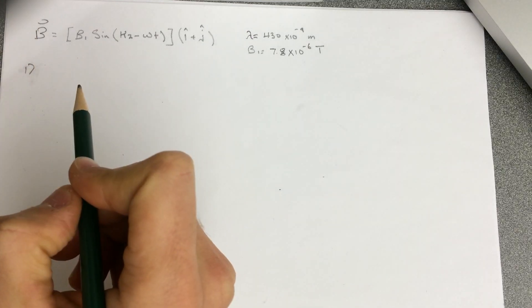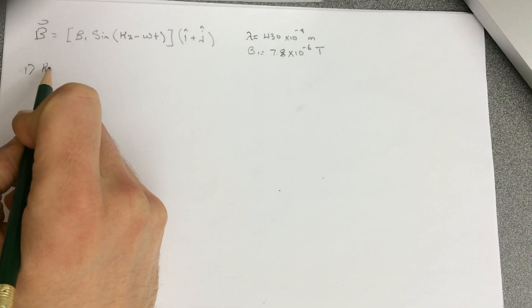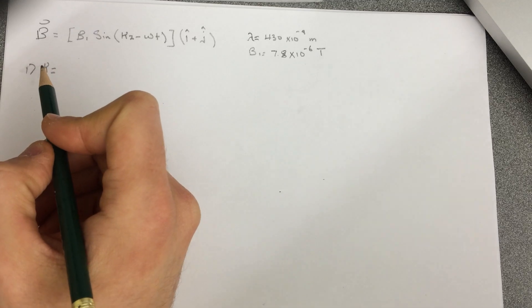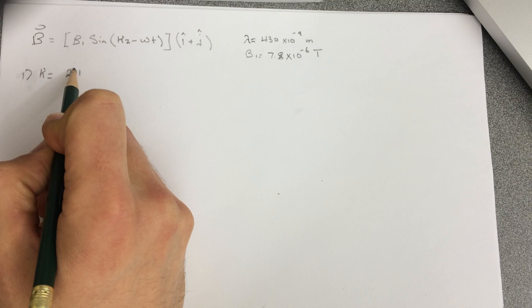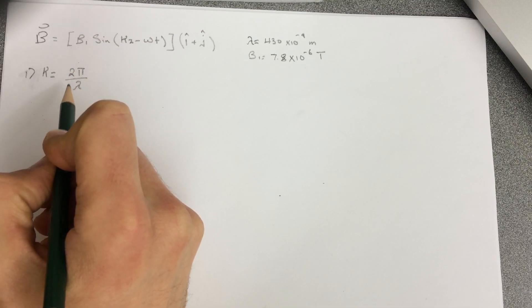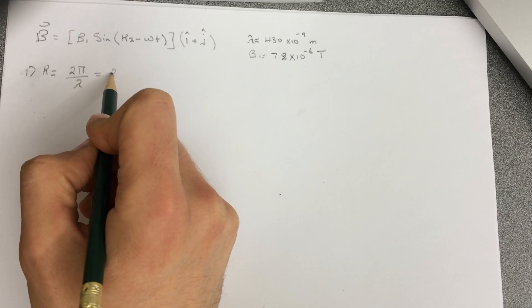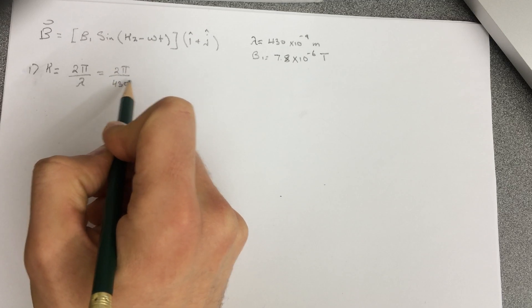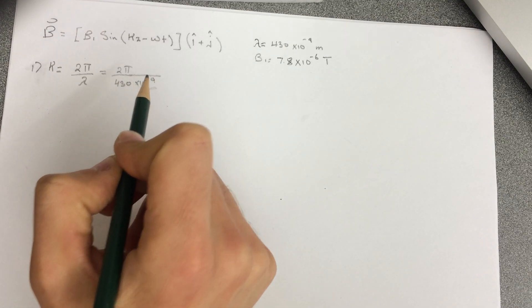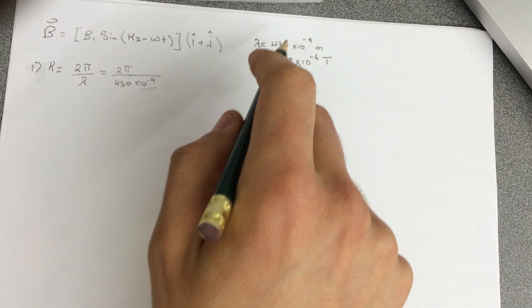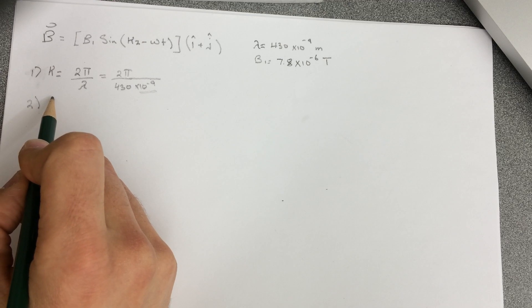The first question is asking: what is K, the wave number of this wave? We need to find K, and K has a formula which is 2π over lambda. So mine was 2π over 430 times 10 to the negative 9 — make sure you convert from nanometers to meters, because it was given in nanometers in the question.